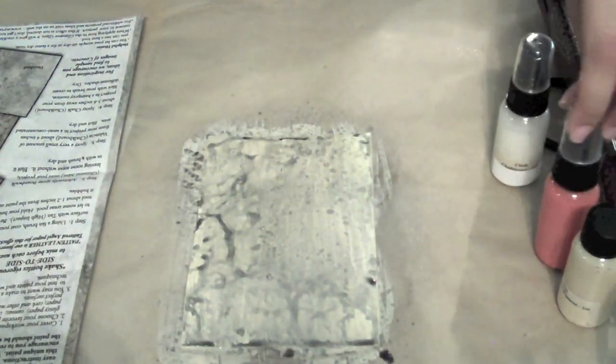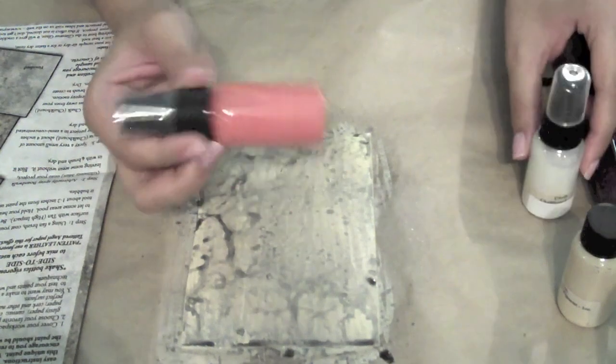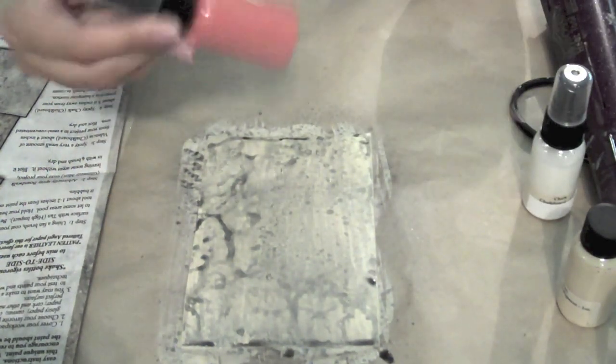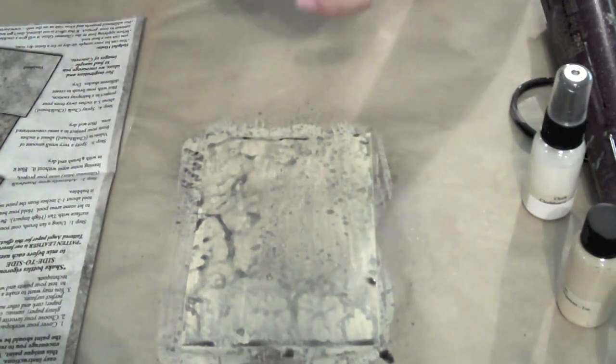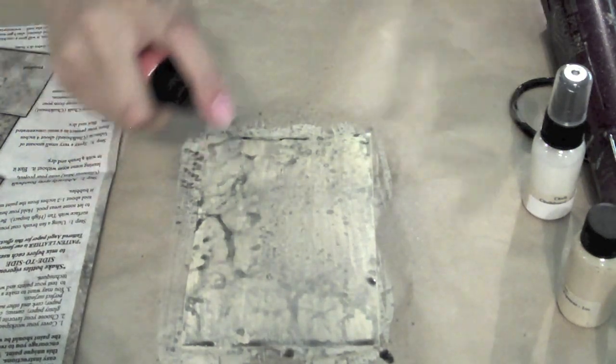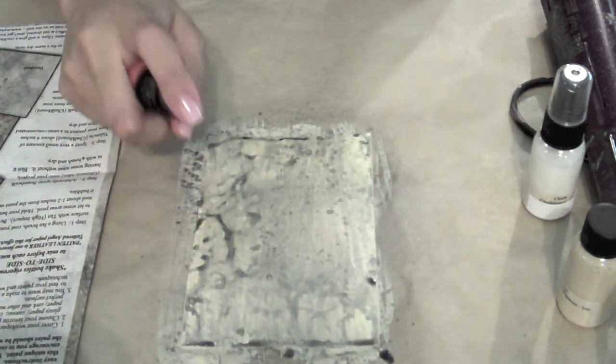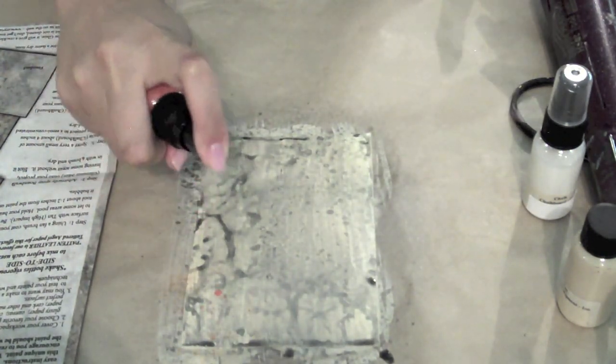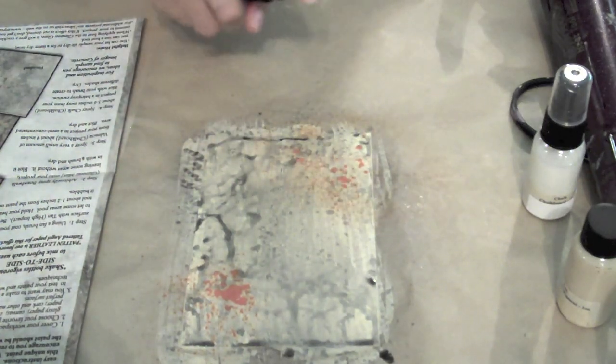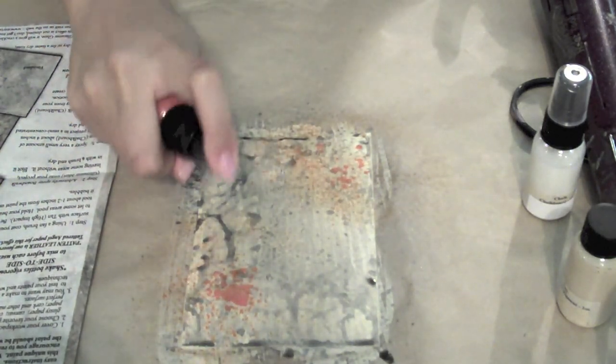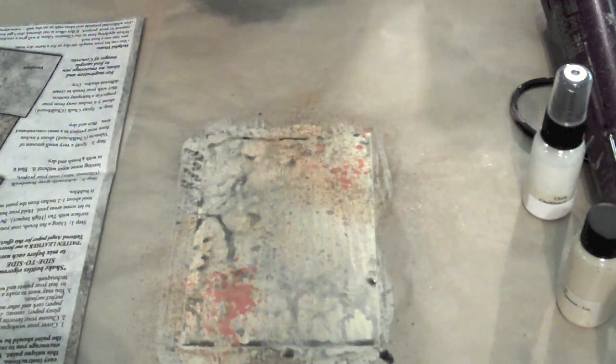All right, once you've done that, you're going to take your Valencia Chalkboard Mist. This is a more opaque mist than the Glimmer Mist. And you're going to stay in certain areas. So you can do one to two areas where you do it pretty concentrated. I just kind of barely spritz. Don't try to get it too heavy on there.